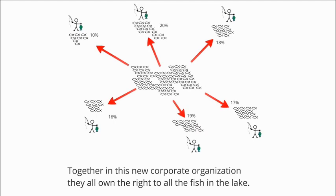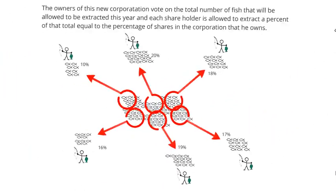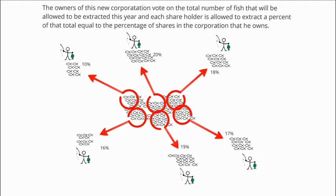The fishermen who then had ownership rights to the entire fish stock would come together and vote on the amount of fish that they would agree to catch next year. Each fisherman was then allowed to catch the percent of that total that they owned in shares of the corporation.